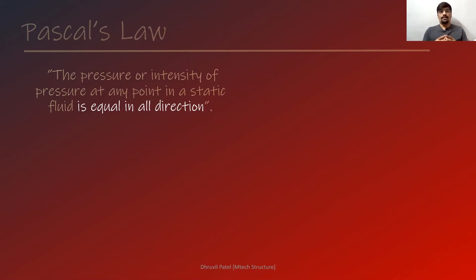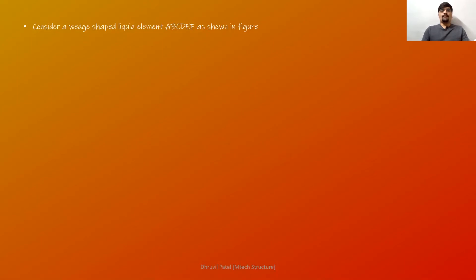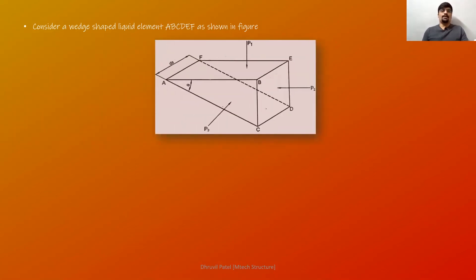Let's check how this is going to be proved. For that, a wedge-shaped triangular element ABCDEF has been considered, as shown in the figure. This wedge-shaped triangle has three planes: the first is the horizontal plane, the second is the vertical plane, and the third is the diagonal plane. The pressure occurring at the horizontal plane is P1, at the vertical plane is P2, and at the diagonal plane is P3.